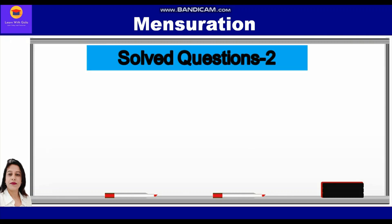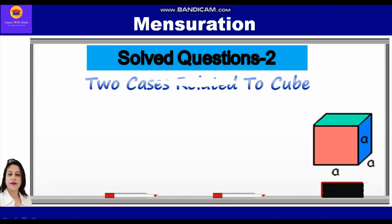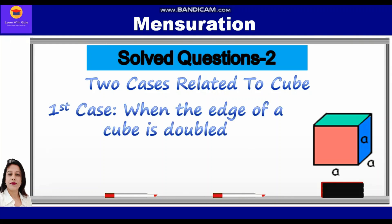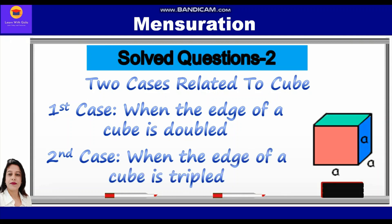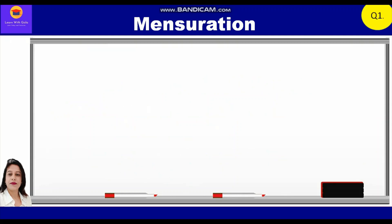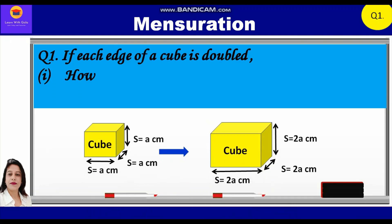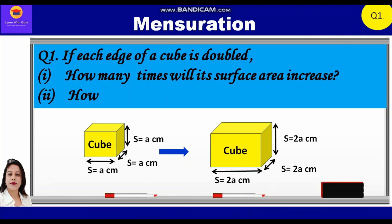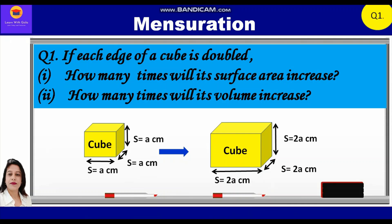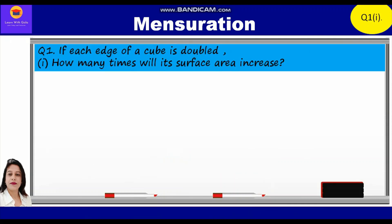Hello everyone. In this video on mensuration, we shall take up a question which is solved in two ways. In the first case, the edge of a cube is doubled, whereas in the second case the edge of the cube is tripled. So let's start with the first question: if each edge of a cube is doubled, how many times will its surface area increase? How many times will its volume increase?